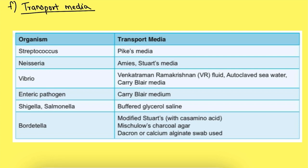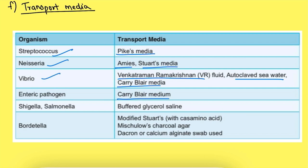Pike's media is used for Streptococcus. Amies and Stuart media are used for Neisseria. Venkatraman-Ramakrishnan (VR) fluid, autoclaved sea water, and Cary-Blair media are all used for Vibrio; Cary-Blair medium is also used for enteric pathogens. Buffered glycerol saline is used for Shigella and Salmonella. Modified Stuart's with charcoal agar and dacron or calcium alginate swab is used for Bordetella.